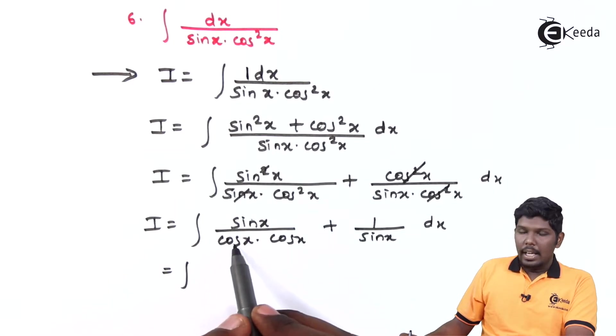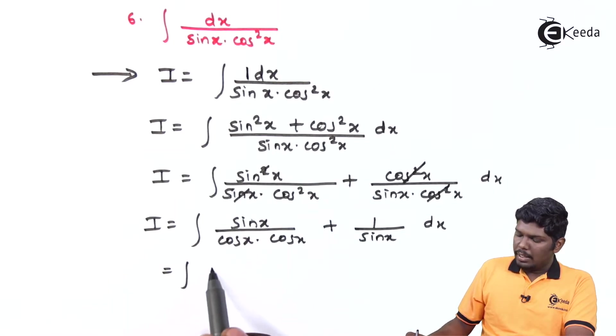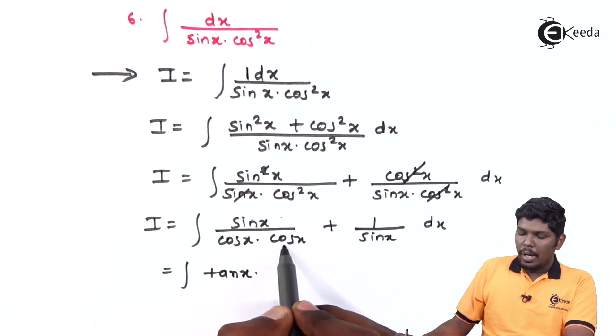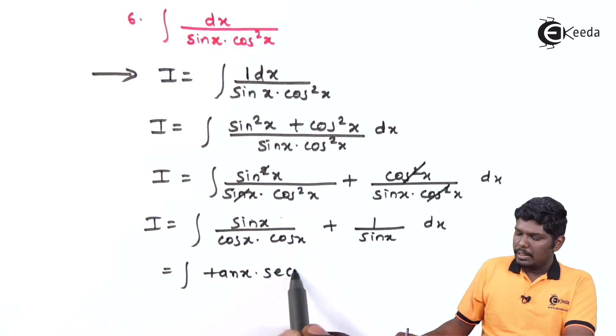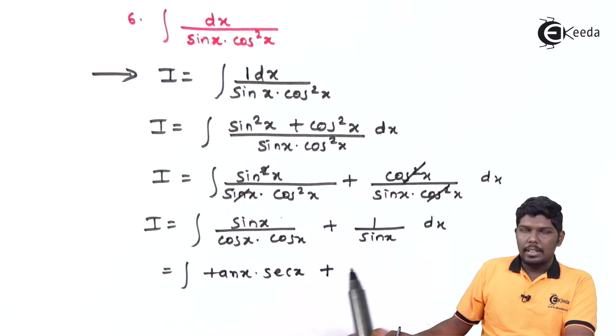Now, sin x upon cos x will give you tan x and 1 upon cos x will give you sec x, plus 1 upon sin x is cosec x.